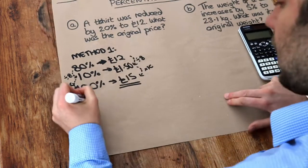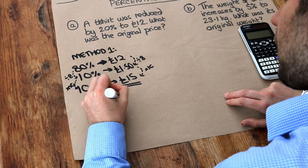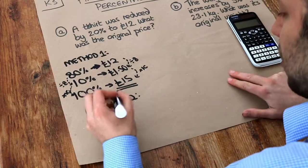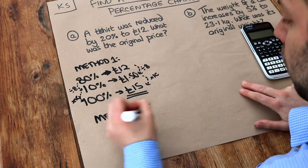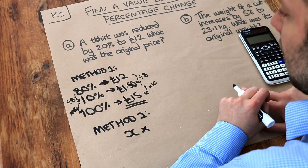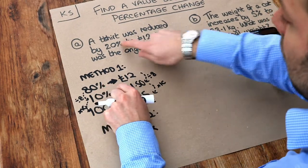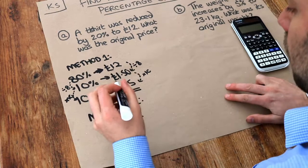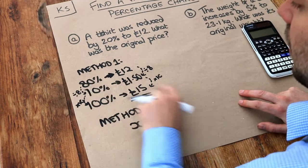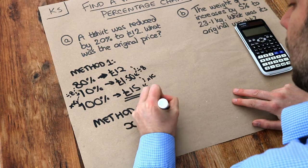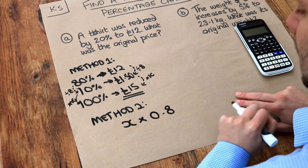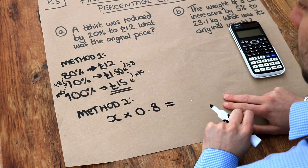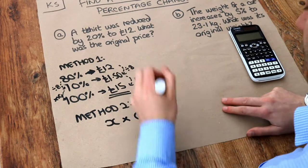But there is a second method we could use and it's this. Let's just say that the original value of the t-shirt was x. We don't know what it is, so we're just going to call it x. Now, what would we multiply something by to reduce it by 20%? Well, we want to find 80% of it. We're reducing it by 20% to 80%. And to find 80% of something, we saw in a previous video that we can work out the equivalent decimal multiplier. Well, 80% as a decimal is 0.8. So multiplying by 0.8 will find 80% of it. It will reduce it by 20%. And after reducing it by 20% or finding 80% of it, that gave us £12.